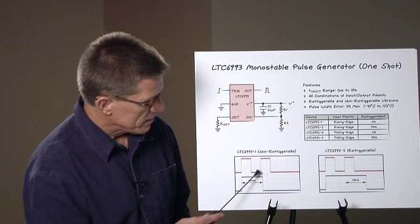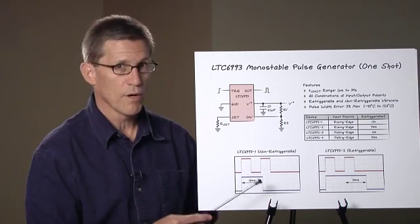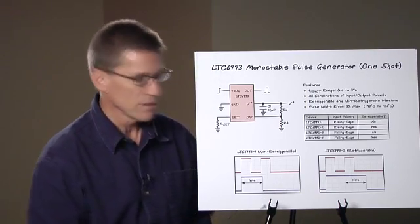Since the second rising edge here is before the one-shot times out, it's ignored. In other words, the part is not retriggered and it just goes low at the end of 16 milliseconds.